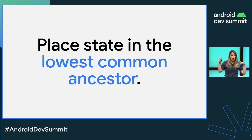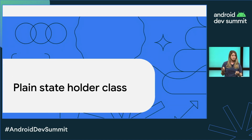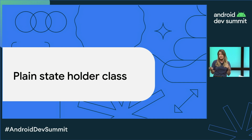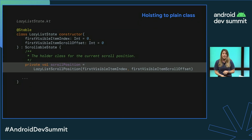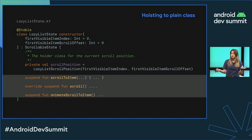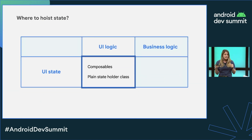We recommend placing your state in the lowest common ancestor between all the composables that read or write this state, while avoiding placing it in composables that don't need it. But when your logic becomes complex, you can abstract your state and logic into a plain class, which will make your composables simpler and allow testing that UI logic in isolation. Lazy list state is a great example: it abstracts the state of a lazy column, storing the scroll position for the UI element, and also exposes methods to apply UI logic, like scroll to item, animate scroll to item, etc.